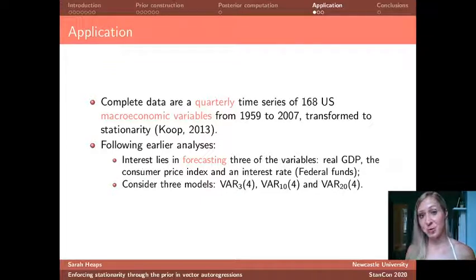And again, like Gary, what I'm going to do is I'm going to compare three different models. So the first is going to be a vector autoregression of order four, where I'm just modeling the three variables of interest. Then I'm going to add seven additional variables to those three variables of interest and fit a VAR(4) model. And finally, I'm going to add a further 10 variables again to my set of 10 to get a VAR(4) model on the 20 variables.